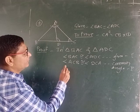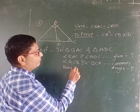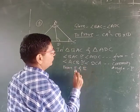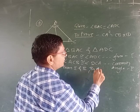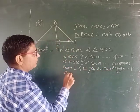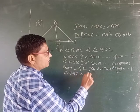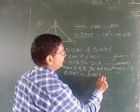From 1 and 2, by which test? From 1 and 2, by AA test, triangle BAC is similar to triangle ADC.